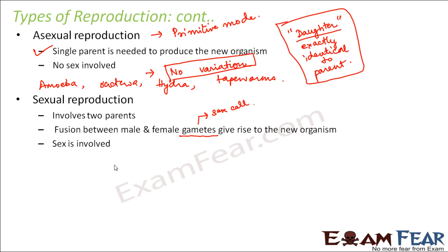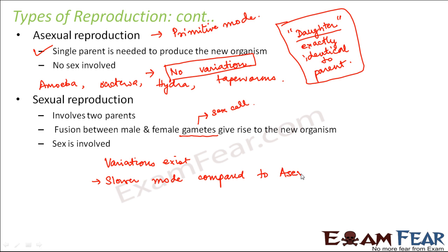In sexual reproduction, variations exist — some new traits will be seen. The daughter will be genetically different from the parents: some traits will be similar to the father, some to the mother, but there will also be some traits which are entirely new. This mode of reproduction is comparatively slower than asexual reproduction, which happens very fast.